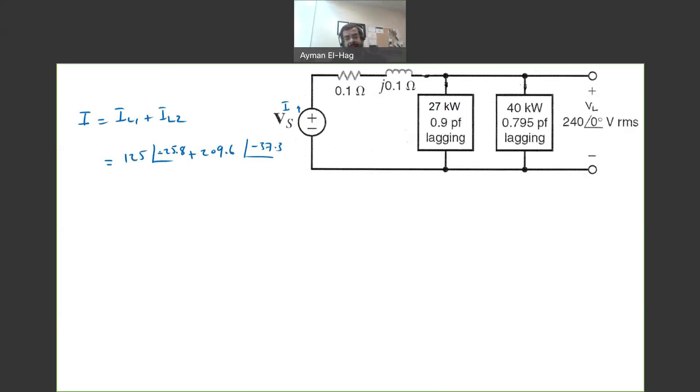Now, these two currents are in polar format, different angles, so I cannot add them. I have first to convert them into rectangular, and then add them, and then convert them back into polar format. So, this is equal to the 125 angle of minus 25.8, which is basically 112.54 minus j54.4 amp. This is your IL1 plus, we'll find IL2, which is basically nothing but 166.73 minus j120.27. So, we'll add the real part with each other, and the imaginary with each other. So, we will have a current equal to 279.27 minus j181.4.